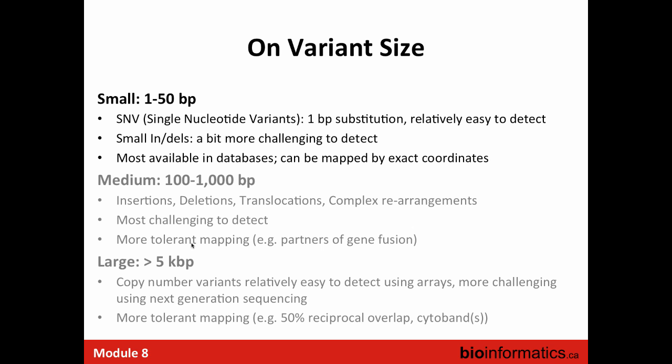There are different types of variants. Our focus today is on small variants, 1 to 50 base pairs, though it's good to be aware of larger variants too. A small variant — single nucleotide variant — is usually a base pair substitution, relatively straightforward to detect with next-generation sequencing. Small indels — insertions and deletions — are more challenging to detect. There are many databases that allow you to map variants to exact genomic coordinates.